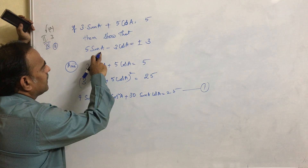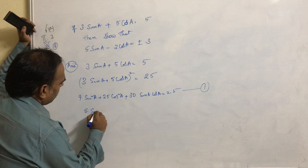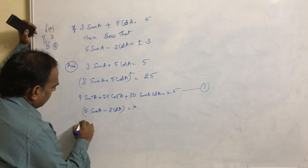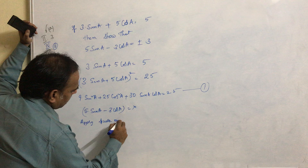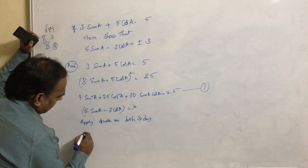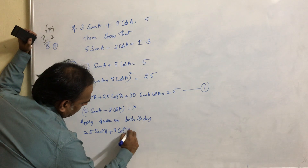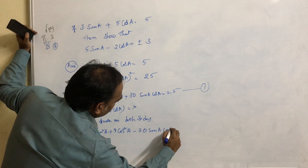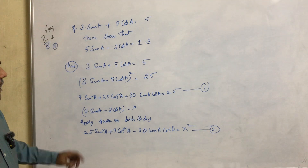We have to show that 5sinA minus 3cosA equals plus or minus 3. Now consider: let us assume that 5sinA minus 3cosA equals X. If we apply square on both sides, this can be written as 25sin²A plus 9cos²A minus 30sinAcosA equals X². Let us say this is the second equation.